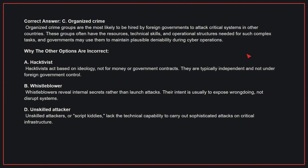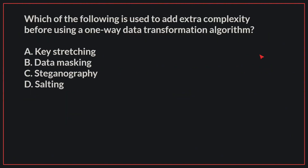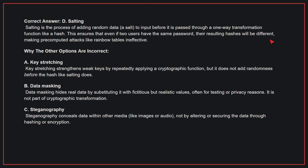Therefore, the correct answer is C. Which of the following is used to add extra complexity before using a one-way data transformation algorithm? The correct answer is D: Salting.